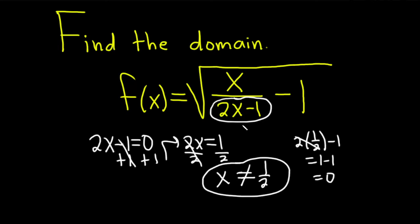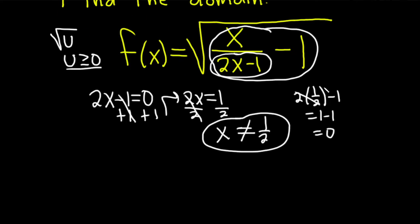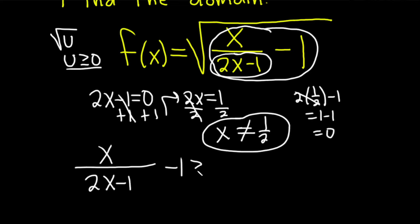Now that we've dealt with division by zero, the only thing left is the square root. Whenever you have a square root of u, u needs to be greater than or equal to zero. So here, u is the entire expression inside the root. We need all values of x, besides x equals 1 half, for which x over 2x minus 1 minus 1 is greater than or equal to zero.